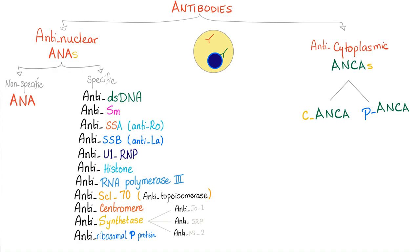Anti-U1-RNP, ribonuclear protein. Anti-histone. Anti-RNA polymerase 3. Anti-scleroderma-70 — for scleroderma. Anti-centromere, for the limited scleroderma or CREST syndrome. Anti-RNA polymerase 3 and anti-scleroderma-70 are for progressive systemic sclerosis, but the centromere is for limited systemic sclerosis, also known as CREST syndrome.